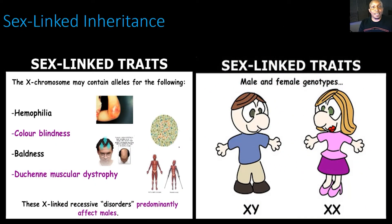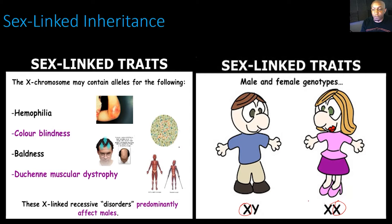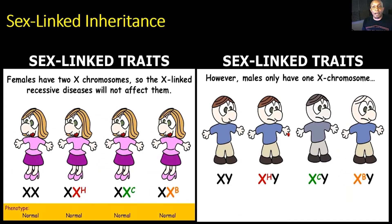Let's look at some more information on sex-linked inheritance. The X chromosome may contain alleles for hemophilia, colorblindness, baldness, or muscular dystrophy. These X-linked recessive disorders predominantly affect males. A female has an additional X chromosome to mask or cover that trait, making her more likely to be a carrier. But a male only has one X chromosome, so if the mother has it on her X chromosome and has a son, the son is going to inherit that trait and have that condition.